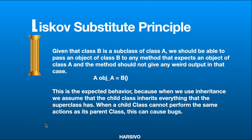Liskov's Substitution Principle says a child class should be able to replace its parent class. Let's say we have two classes, class A and class B, where class B is a subclass of class A. So class A becomes our parent class and class B becomes our subclass. An object of class A can accept an object of class B, because it is expected that class B will have all the functionality and properties which class A is expecting. Since B is a subclass of A, the object of class A can accept a class B object as well.